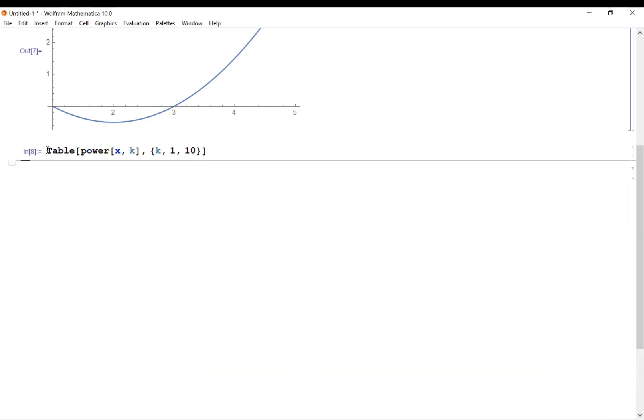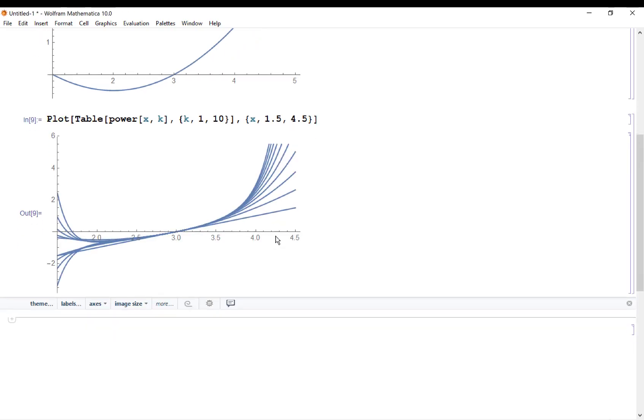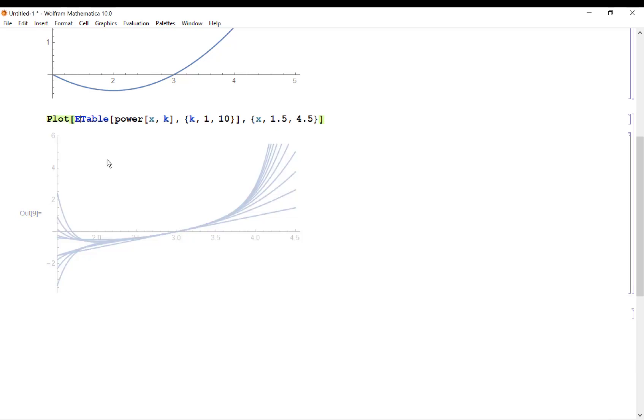What I want to do is really plot these things. So I'm going to plot all 10 of these power functions, and I'm going to go from 1.5 to 4.5. Let's see what we get. Oh, look, so we get all these different functions. Now I want some color in it. The way you put the color in when you're plotting a table is you put evaluate around your table.